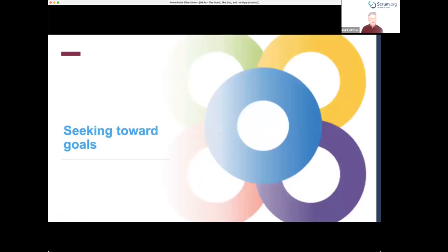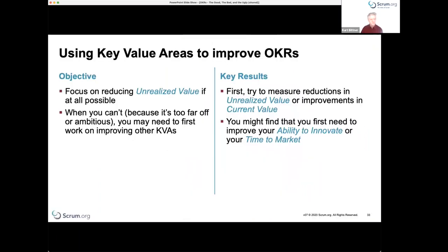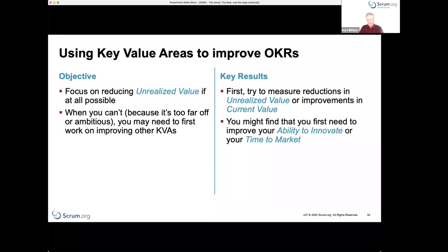If we use those key value areas as lenses to improve OKRs, typically your objective should focus on reducing unrealized value. If it's not focused on that, it might be a more tactical objective — which might be okay in the short term — but ultimately organizations are typically focused strategically on reducing unrealized value. Under key results, you should first try to measure reductions in unrealized value: how are we closing that satisfaction gap, or how can we prove we're improving the current value of the product?